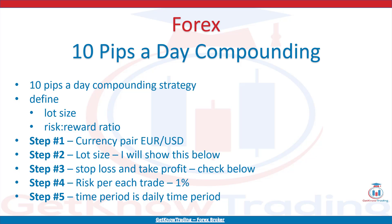Let's check the 10 pips a day compounding strategy. In this example, I want to show you how it looks when you use a 10 pips a day compounding strategy, where you define lot size and risk to reward ratio, then open the trade. You will see how much you can make by using a 10 pips a day target. The profit each day from 10 pips will be added to the initial balance, then calculate the next day's return. I will use 1% of profit per day as a target. Summary: Step 1 - EURUSD. Step 2 - Lot size shown below. Step 3 - Stop loss and take profit. Step 4 - Risk per each trade is 1%. Step 5 - Time period is daily.